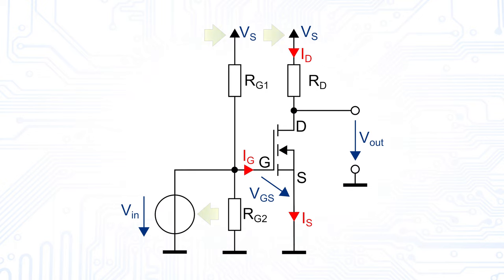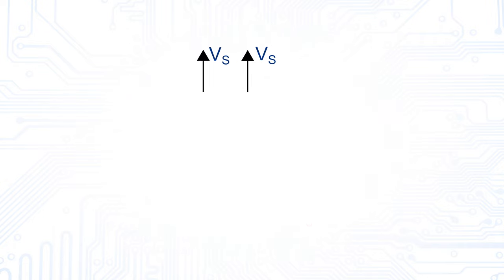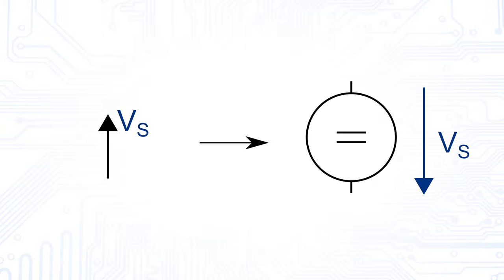Secondly, we replace all constant current and voltage sources by their inner ideal resistances. These arrows, which are named with VS, symbolize a voltage source.